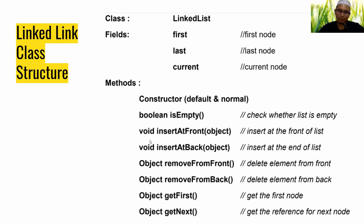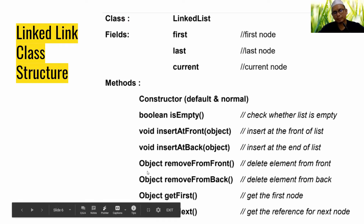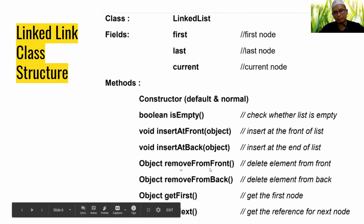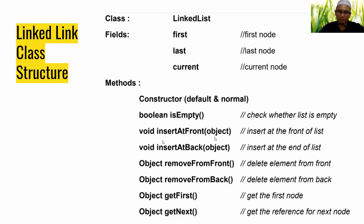Look at the return value and parameter for every method. For example, insertAtFront returns void and takes one parameter. The same applies to insertAtBack. RemoveFromFront returns an Object and takes no parameter. RemoveFromBack is the same. GetFirst returns an Object, and so does getNext.